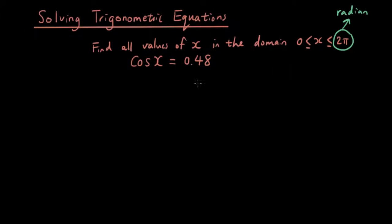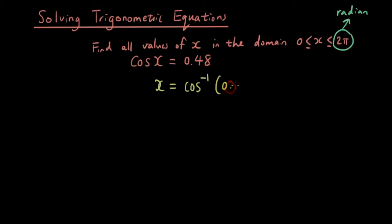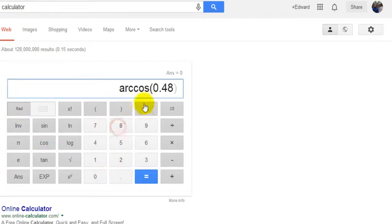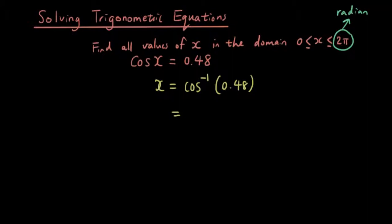Okay, so now we're going to rearrange it to make x the subject. So x equals inverse cos of 0.48. Put your calculator on radians and then do inverse cos bracket 0.48 — by the way, arc cos just means inverse cos. Inverse cos of 0.48 gives you 1.0701. Write that down to four decimal places: 1.0701.